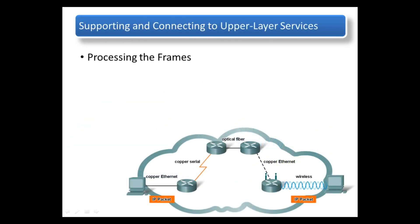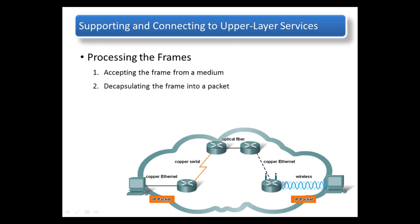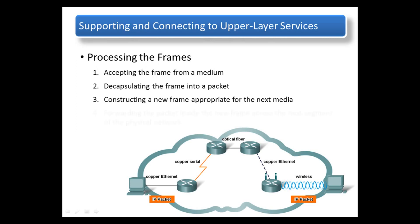The packet can be repackaged into different frames as it travels the delivery path. At each hop along the path, the router processes the frame as follows: Step 1 — accept the frame from the medium. Step 2 — remove the packet from the frame by decapsulation. Step 3 — create a new frame compatible for the next media. Step 4 — use this new frame to forward the packet across the next segment.